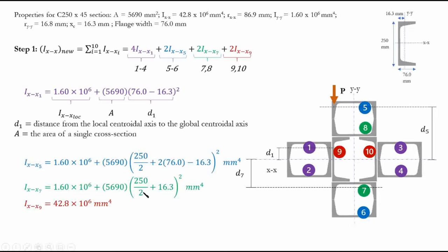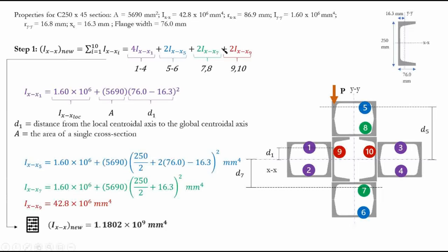Using the complete formula and adding all values together, we calculate IXX_new = 1.1802×10⁹ mm⁴. Moving on to IYY: since the section is symmetric, the global centroid is known. If it were not symmetric, our first step would be to calculate the centroid of the column. We follow the same grouping process for the YY axis.